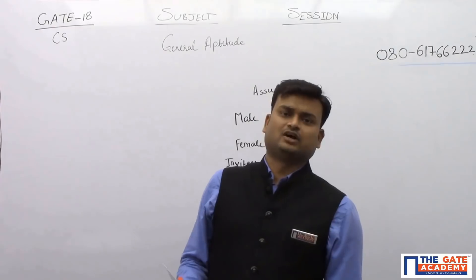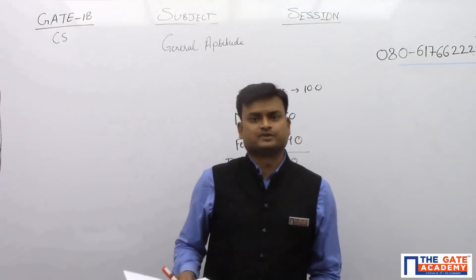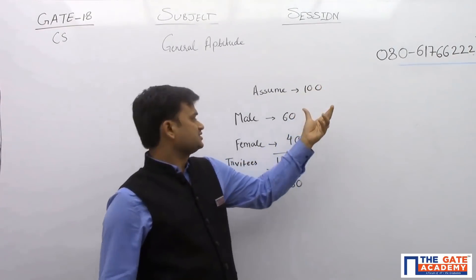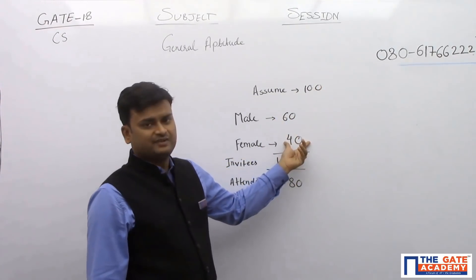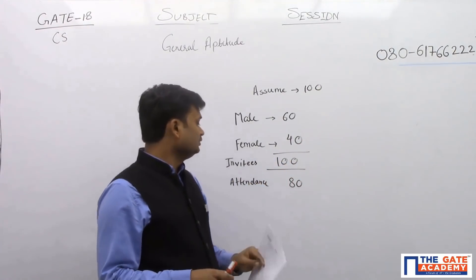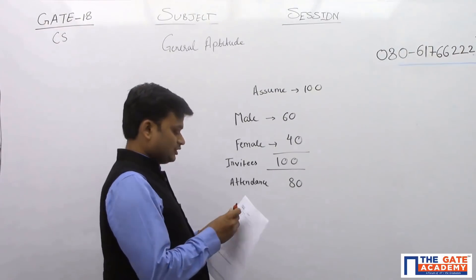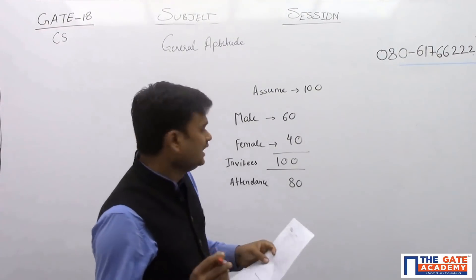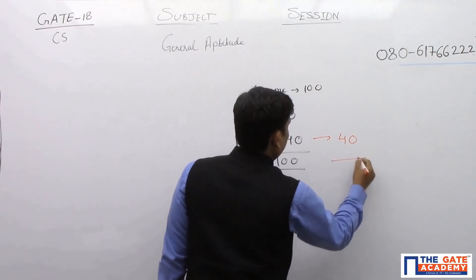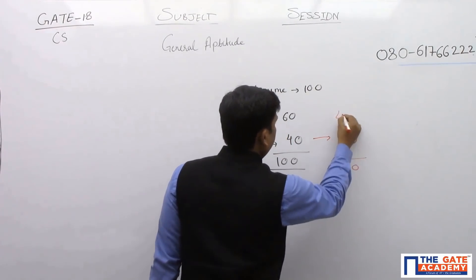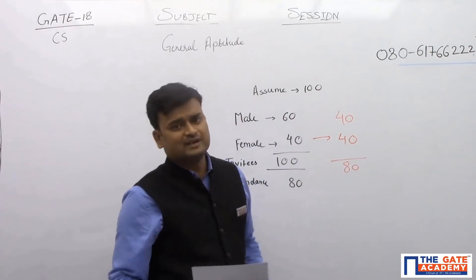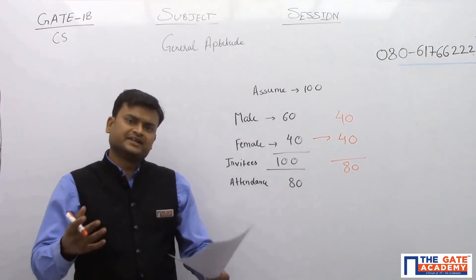Now to solve this question, I always prefer to assume some numbers. So here I have assumed that total numbers are 100, out of which 60 are male and 40 are female. So total invitees are 100. Now attendance is 80, because it is 80% out of 100, it will be 80, out of which they are saying all females attended. Total is 80, so therefore males should be 40. So what will be the ratio of male to female? It will be 1 to 1.